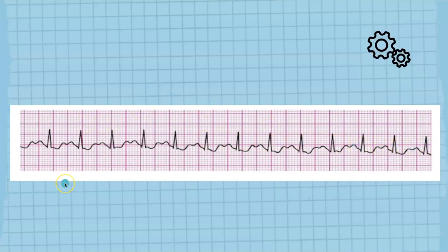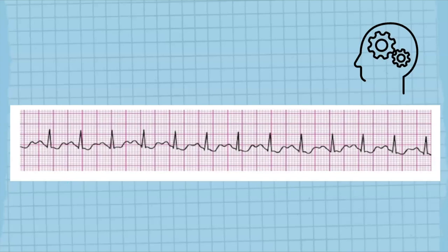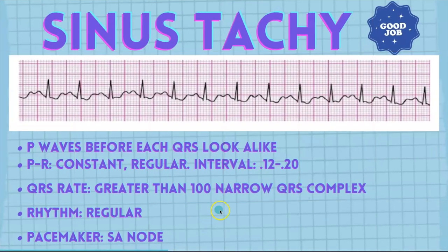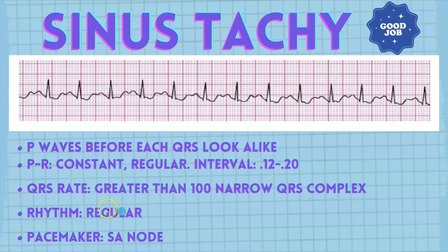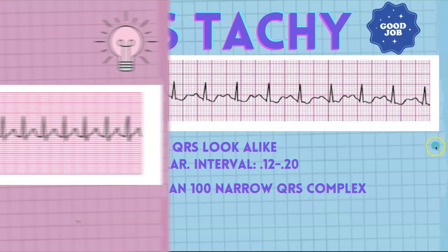So the heart rate is about 130 per minute. So if it's that high, what are you thinking? If you said sinus tachycardia, you are correct. P waves before each QRS — they look alike. The PR is constant, with a regular interval of 0.12 to 0.20 seconds. The QRS rate is greater than 100, there are narrow QRS complexes, the rhythm is regular, and the pacemaker is the SA node.